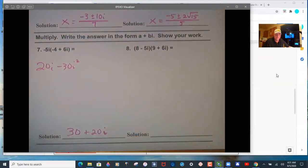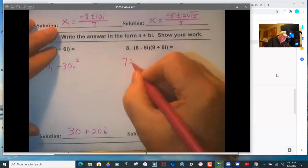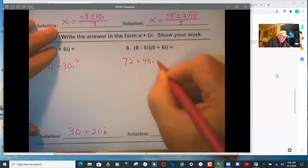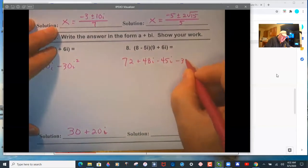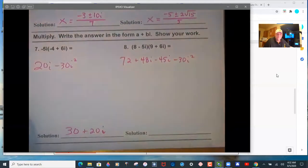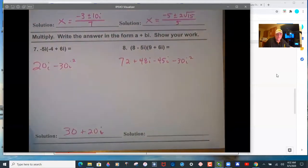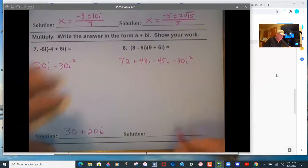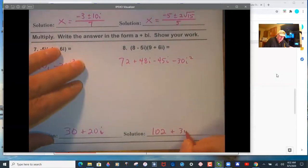30 plus 20i. FOIL product, first 2, 72, plus outer 2, 48i, minus 45i, minus 30i squared, last 2, minus 30i squared. This is 3i.